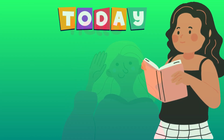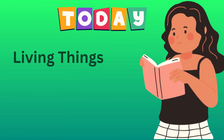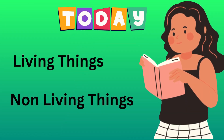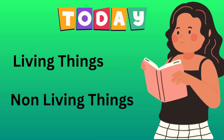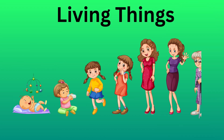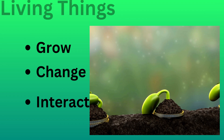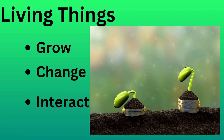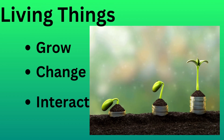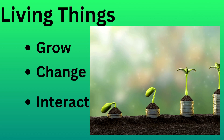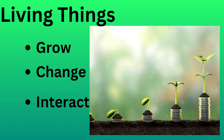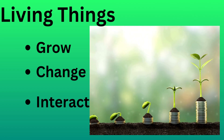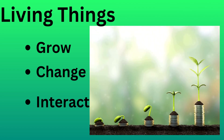Hello everyone. Today we're going to learn about living and non-living things. Let's explore what makes something alive and what doesn't. Living things are organisms that grow, change and interact with their environment. They have some key characteristics that set them apart from non-living things. Let's take a look at these characteristics.